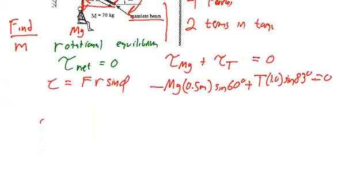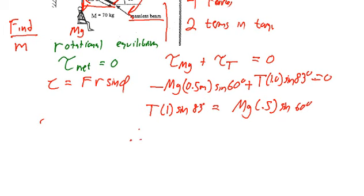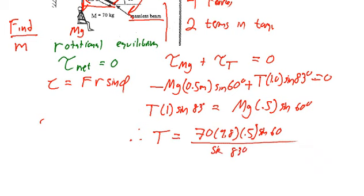Alright, so let's go ahead and solve this expression for the tension in the cable. So if I rearrange, I have T times 1 times the sine of 83 degrees equals MG times 0.5 times the sine of 60 degrees. So therefore the tension will be equal to the weight, which is 70 times 9.8 times 0.5 times the sine of 60 divided by the sine of 83 degrees.